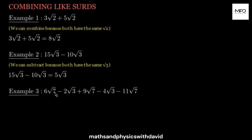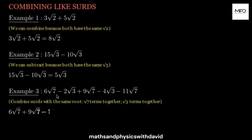In this example, we have square root of 7 and square root of 3. All you have to do is collect the like terms — let the ones with square root of 7 be together and the ones with square root of 3 be together. With the ones with square root of 7, when you combine them: 6 plus 9 is 15, then 15 minus 11 is 4, and they all share square root of 7, so you get 4 root 7.